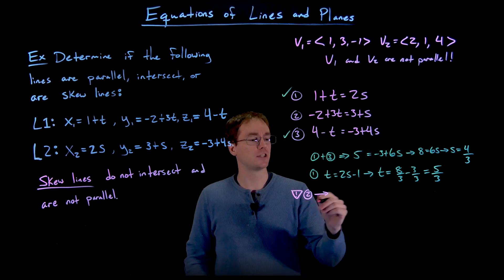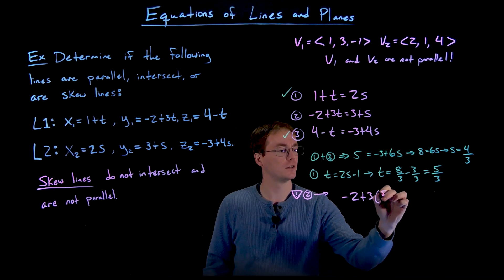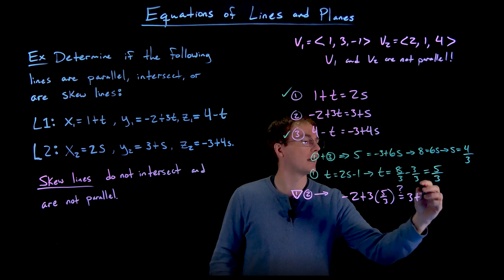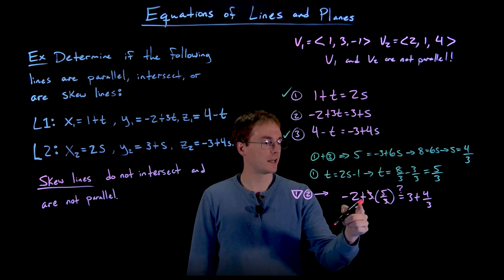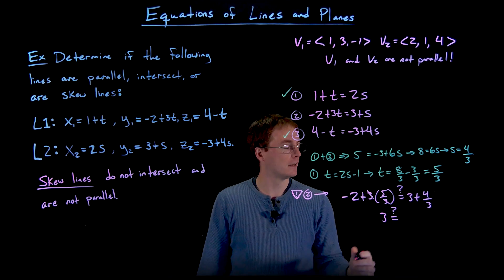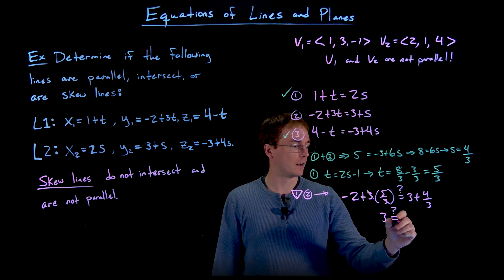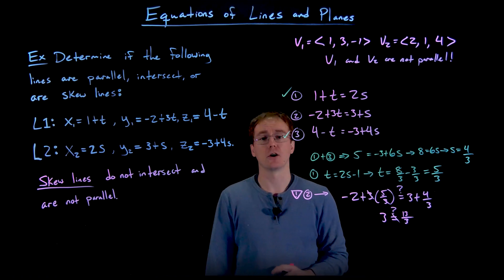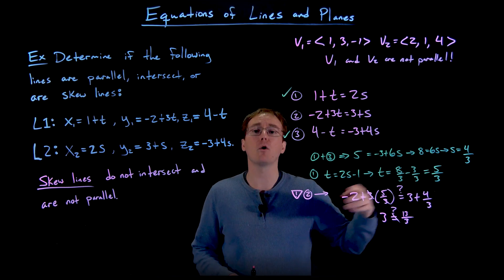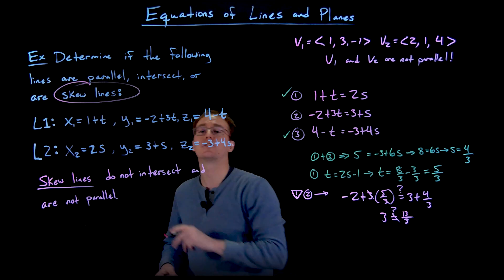Checking equation 2 with t = 5/3 and s = 4/3: the left side gives −2 + 3(5/3) = −2 + 5 = 3, and the right side gives 3 + 4/3 = 13/3. Since 3 ≠ 13/3, this is a contradiction — our lines are skew lines.